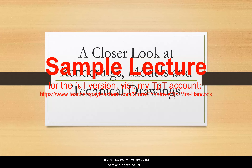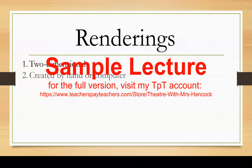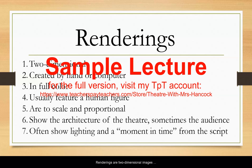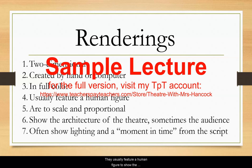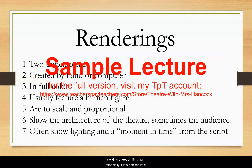In this next section, we are going to take a closer look at renderings, models, and technical drawings such as ground plans and elevations. Renderings are two-dimensional images created by hand, or sometimes on computer, showing the entire set in full color. They usually feature a human figure to show the scale or size of the scenery. Without a human figure, it can sometimes be difficult to tell if a wall is 8 feet or 18 feet high, especially if it is non-realistic. These renderings are to scale, so they should be proportional and look like a snapshot of a moment in time from the play.